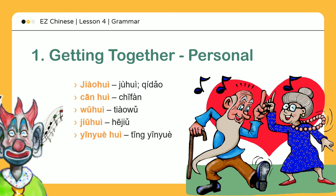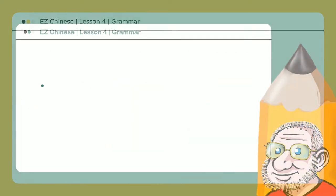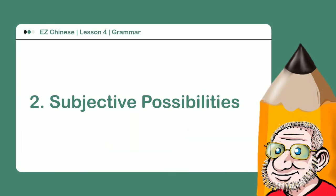晚会: 看表演 — Evening show or performance party.